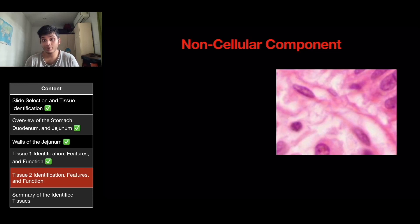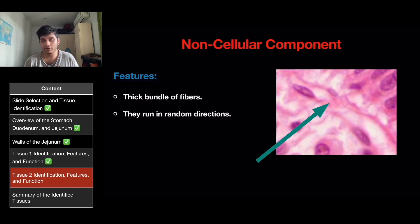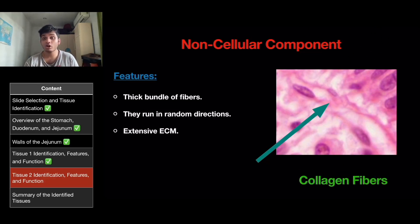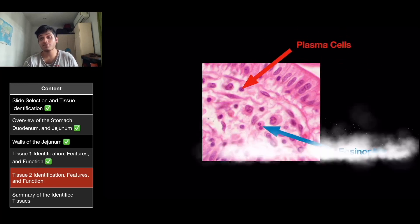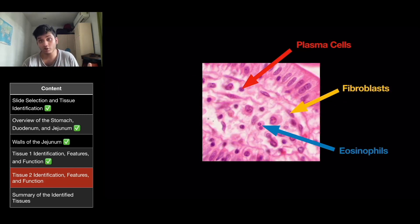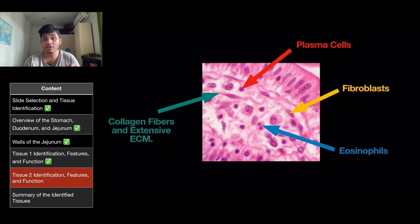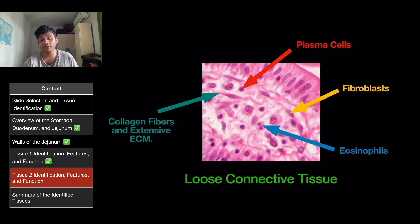The noncellular component shows a thick bundle of fibers running in random directions, along with an extensive amount of extracellular matrix — fitting the description of collagen fibers. For tissue two, the three cells identified were plasma cells and eosinophils (for defense purposes) and fibroblasts (which produce extracellular matrix and collagen fibers), along with the noncellular collagen fibers and extensive extracellular matrix. These all fit the description of loose connective tissue.